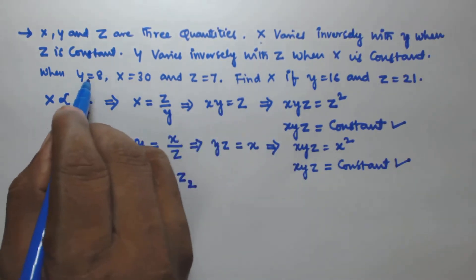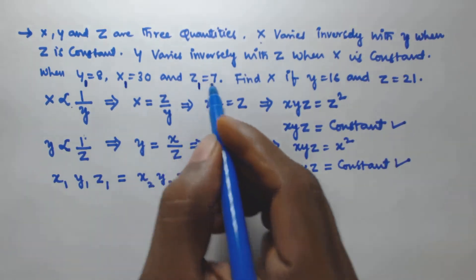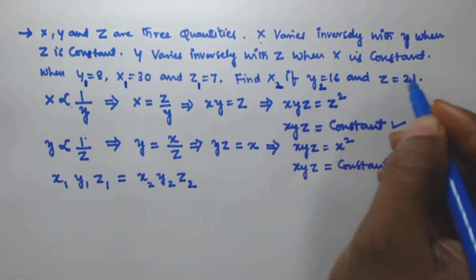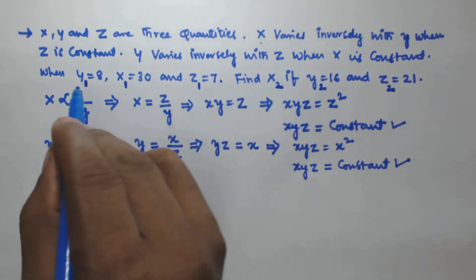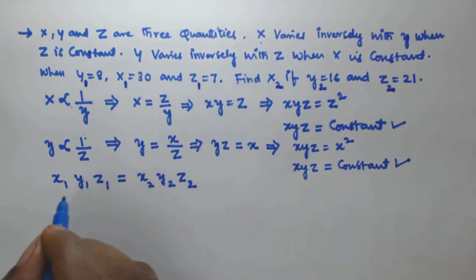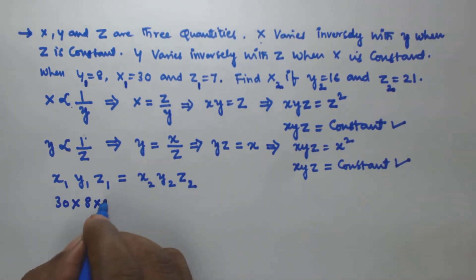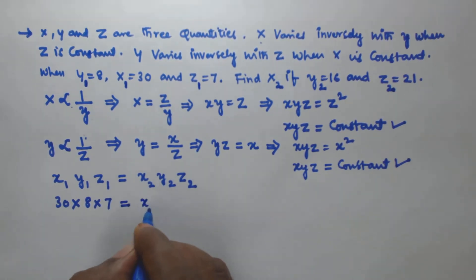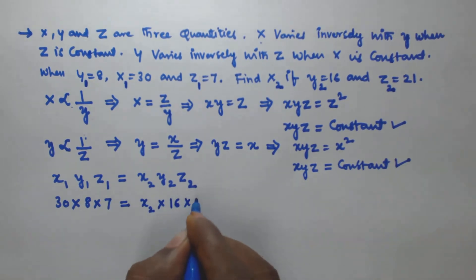Now let us assign the given values: y₁ is 8, x₁ is 30, z₁ is 7, and we have to find x₂, with y₂ equal to 16 and z₂ equal to 21. Substituting all values into the equation: 30 times 8 times 7 is equal to x₂ times 16 times 21.